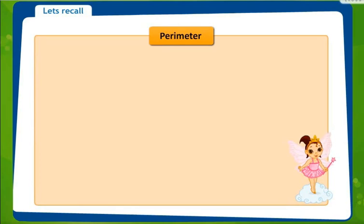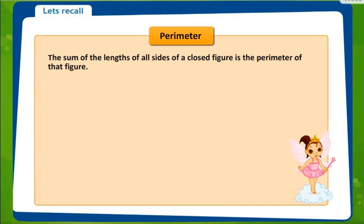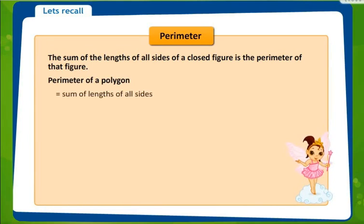Now we will further study perimeter. As we all know, perimeter is the sum of all the sides of a closed figure, as we have seen in the rectangle. There are four sides, so the perimeter will be the sum of those four sides. Now, perimeter of a polygon — polygon meaning n number of sides — so it will be the sum of the lengths of all the sides.